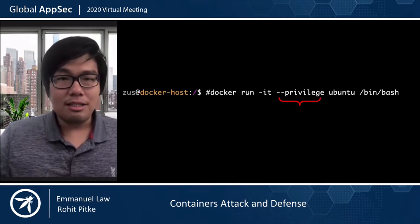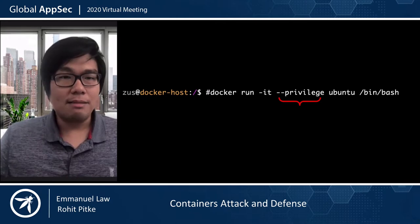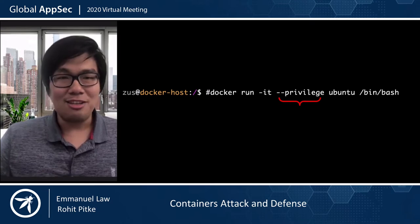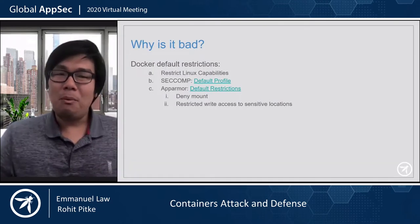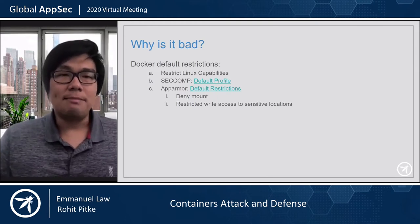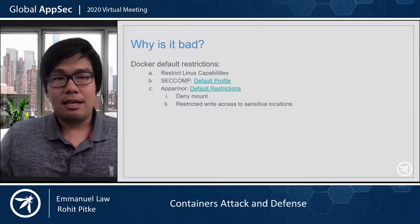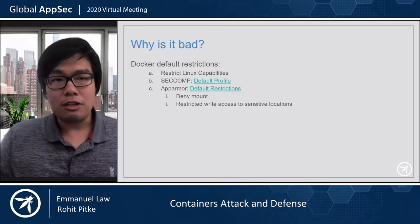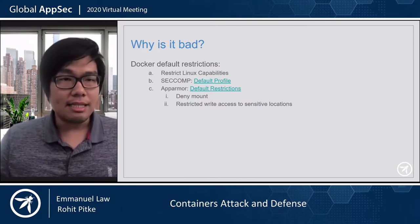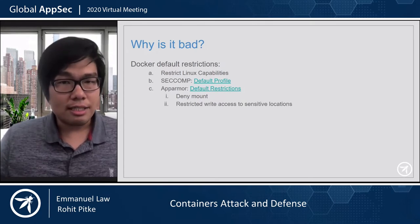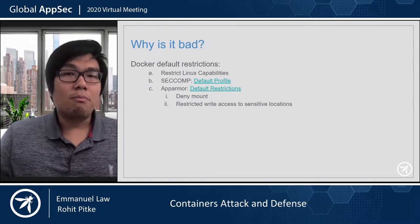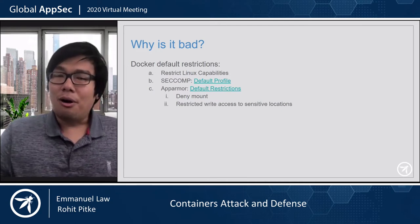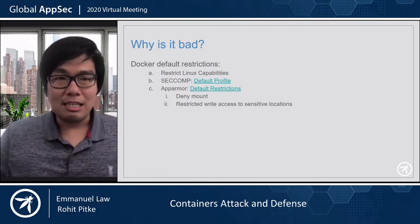For those of you who have been dealing with Docker for a while, I'm sure you have seen people running Docker containers with --privileged. Maybe even you are guilty of this yourself. But what is --privileged, and why is it bad? To understand that, you've got to realize that when you run Docker, by default it comes with a whole bunch of restrictions: restricted Linux capabilities, seccomp to filter and restrict syscalls, and AppArmor to restrict mount operations and prevent write access to sensitive locations. All of this goes away when you run a container in privileged mode.